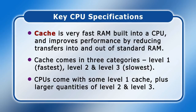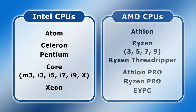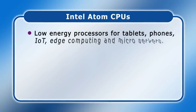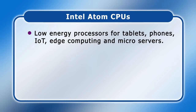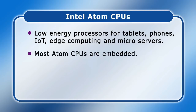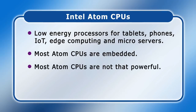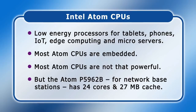Cache really needs a whole Explaining Computers video to itself. With some terms defined, let's now turn to Intel's CPU range. This starts with its Atom family, which consists of low-energy chips manufactured for tablets and smartphones, as well as for IoT, edge computing, and microservers. Most Atom chips are embedded on a motherboard rather than fitted in a socket, and hence are not available for individual system builders. Most Atom chips are also not that powerful. However, the Atom P5962B, which is designed for use in network base stations, does have 24 cores and an impressive 27 megabytes of cache.